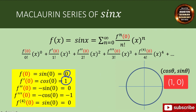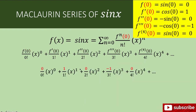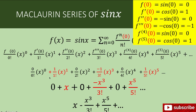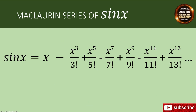Using these values, we substitute into the Maclaurin series. The terms with 0 vanish, and what remains is: x over 1 factorial, minus x cubed over 3 factorial, plus x to the fifth over 5 factorial, minus x to the seventh over 7 factorial, and so on — giving us the Maclaurin series expansion of sine of x. This is the polynomial used when graphing the approximation for sine of x.